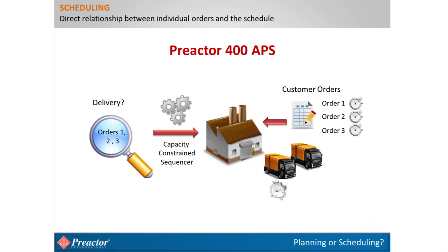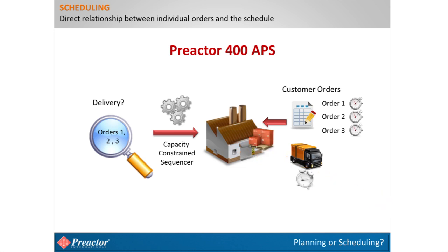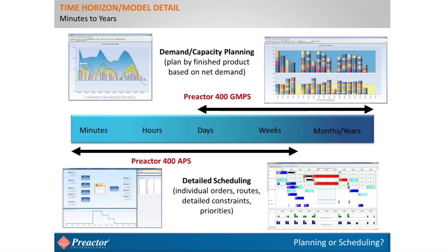Another difference between planning and scheduling systems is the time horizon over which they work. There is quite a lot of overlap, but generally planning systems work days, weeks, and months ahead, while scheduling systems work in much shorter time frames. The reason is the level of detail — is it really important to know that an operation is due to start at 9 a.m. six months from now? Inevitably something will change before then, such as actual start and finish times of operations or a higher priority order arriving.